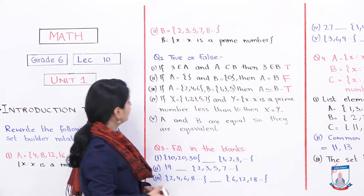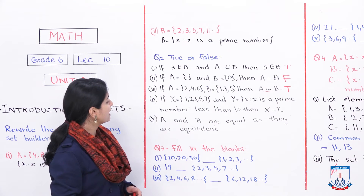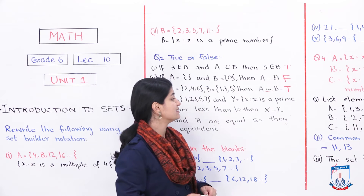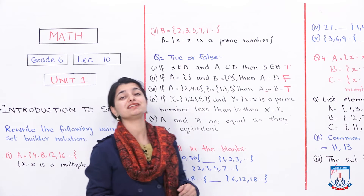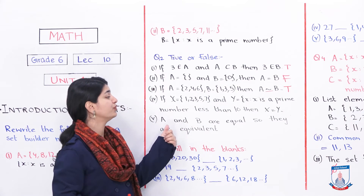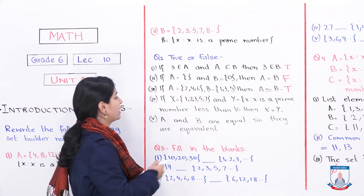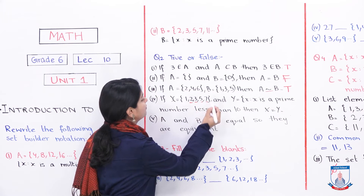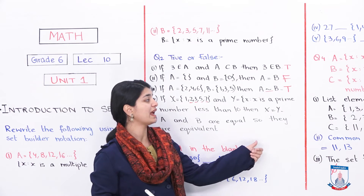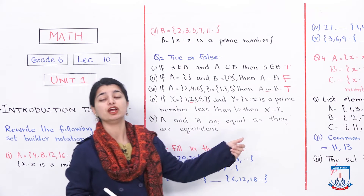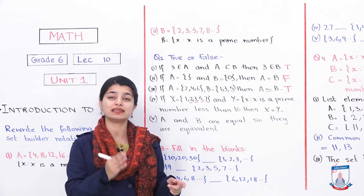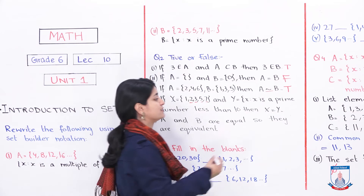Fourth statement: if X equals {1, 2, 3, 5, 7} and Y equals {X : X is a prime number less than 10}, then X equals Y. Now, 1 is not a prime number, but it is included in set X. The set Y contains only prime numbers less than 10: {2, 3, 5, 7}. Since X contains 1 which is not in Y, the two sets are not equal. This statement is false.